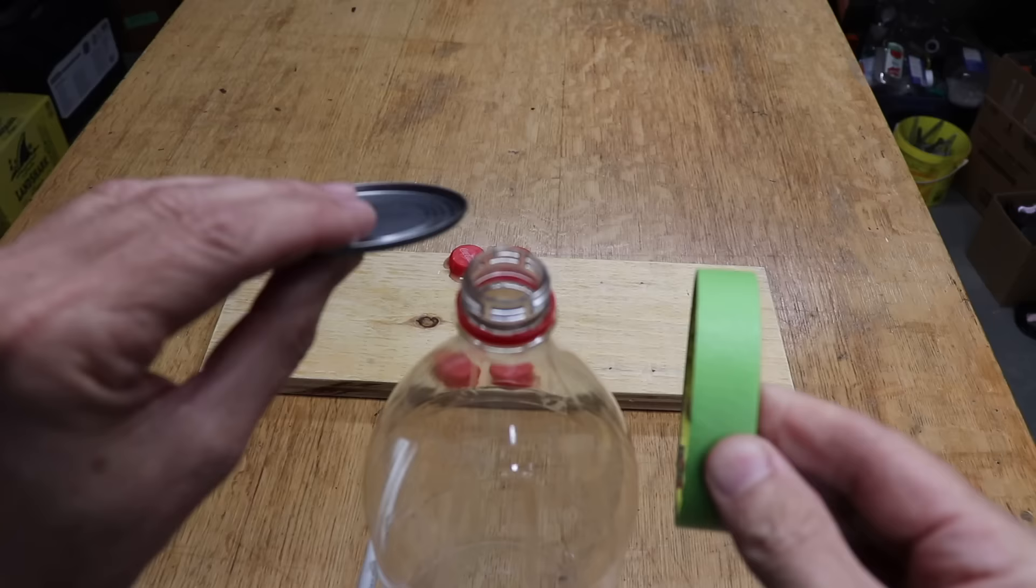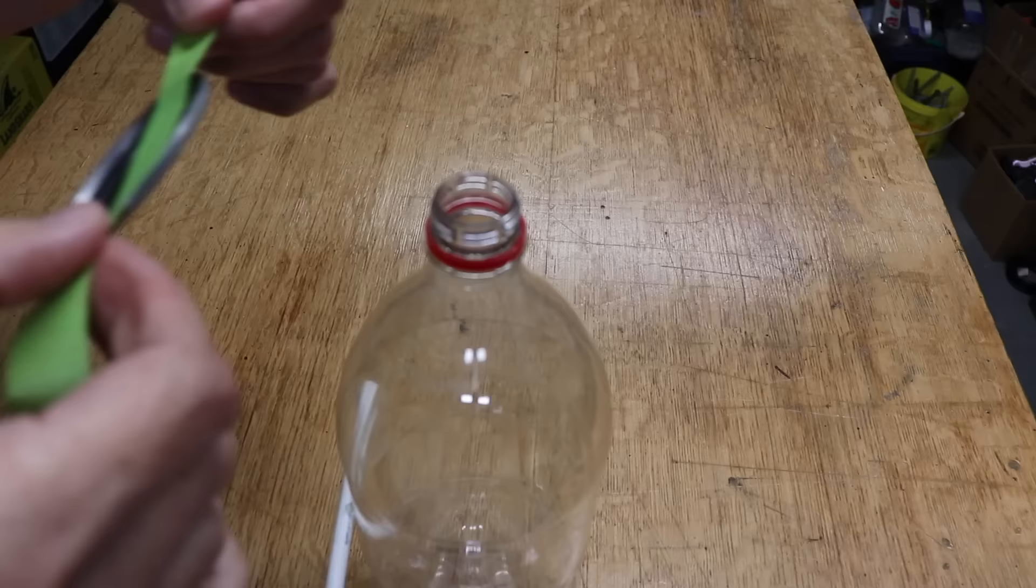Now take your soup can lid and place it against the end of the bottle. Now just take some tape and tape it to the bottle in about the same position.